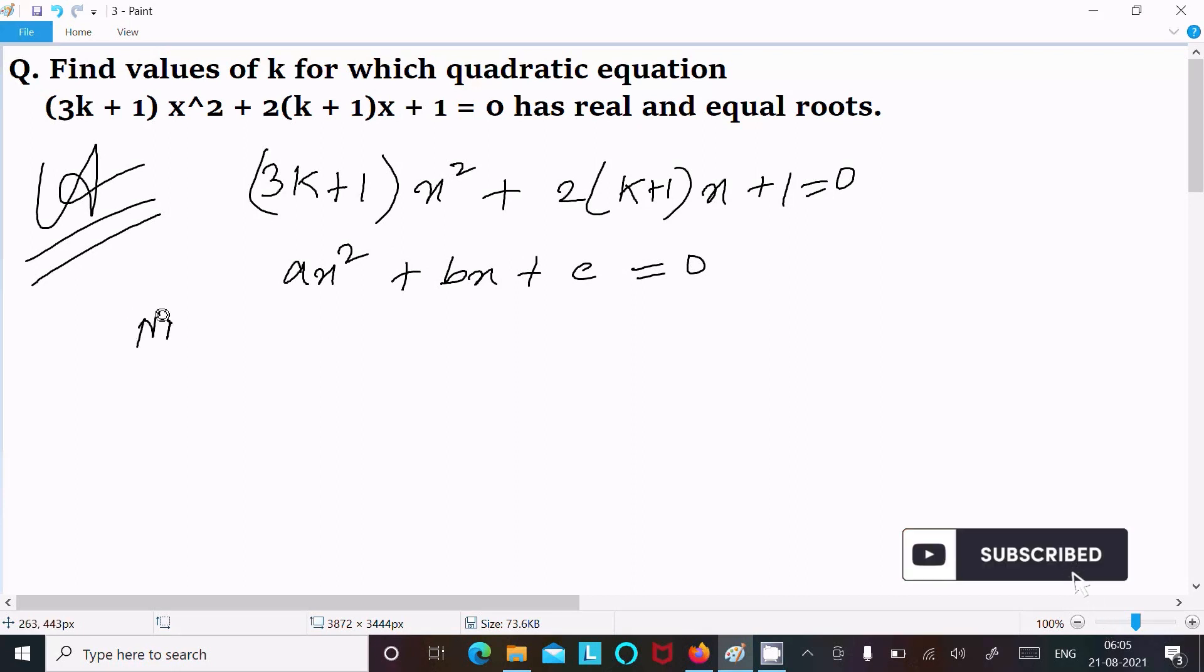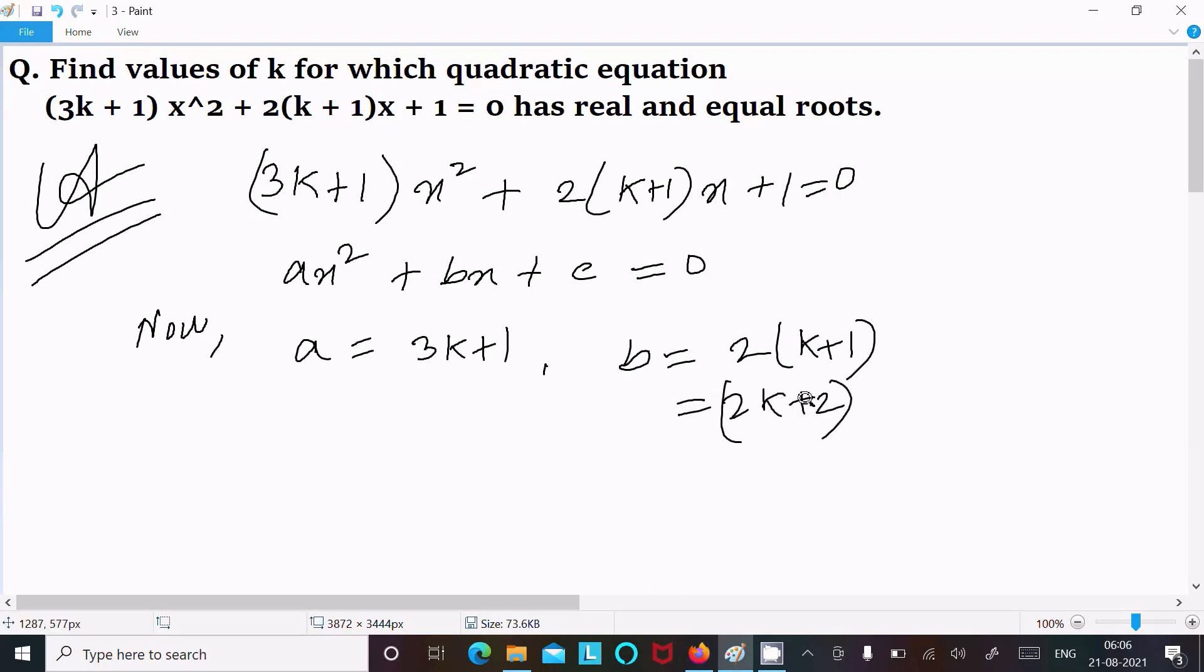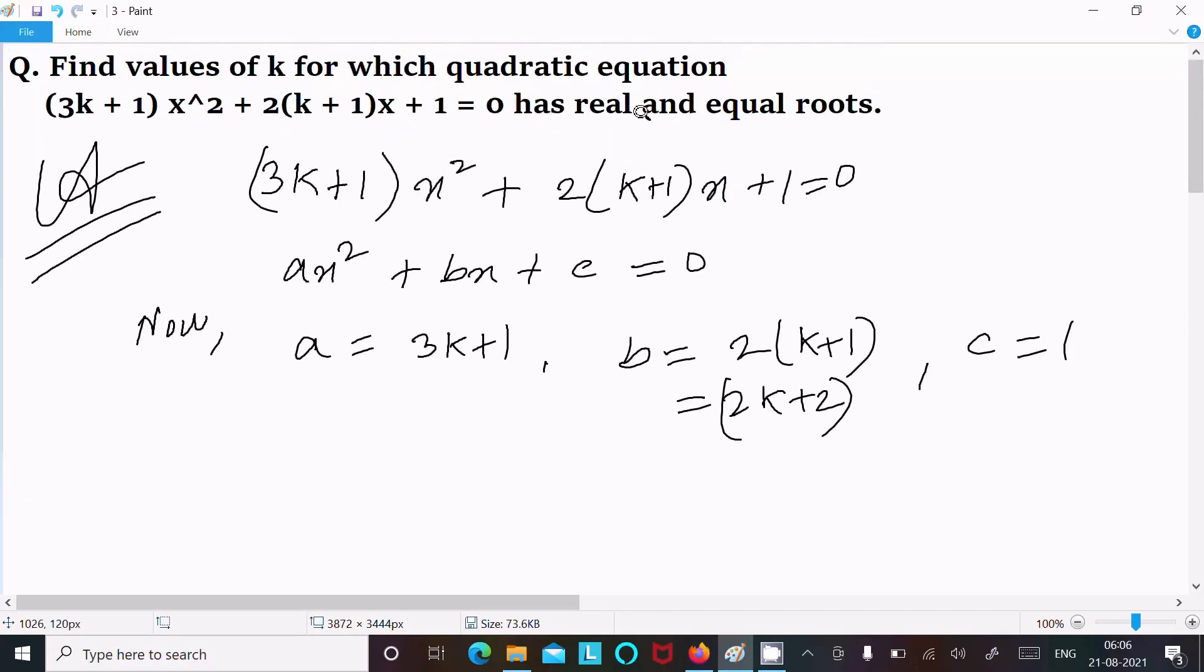Now here we can easily find out: a = 3k+1, b = 2(k+1) or we can write 2k+2, and here c = 1. Now next is here real and equal roots.